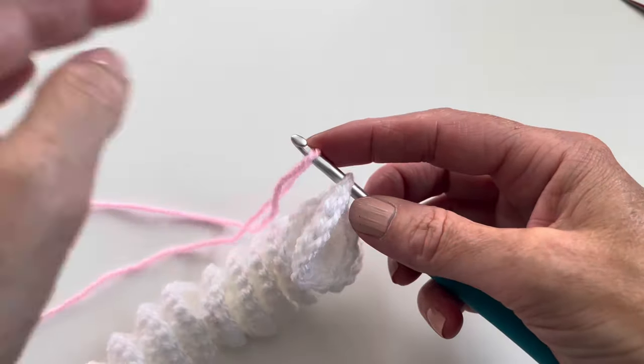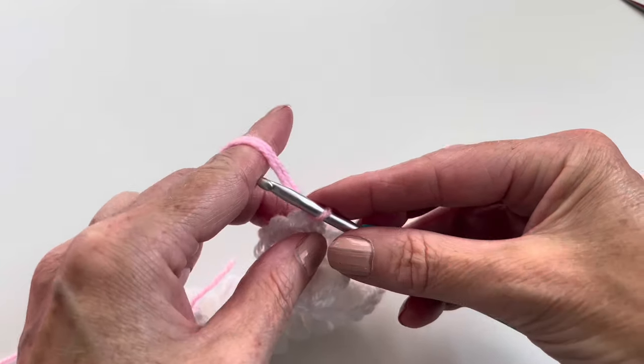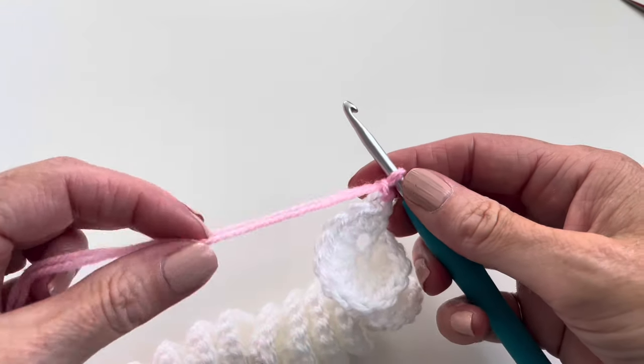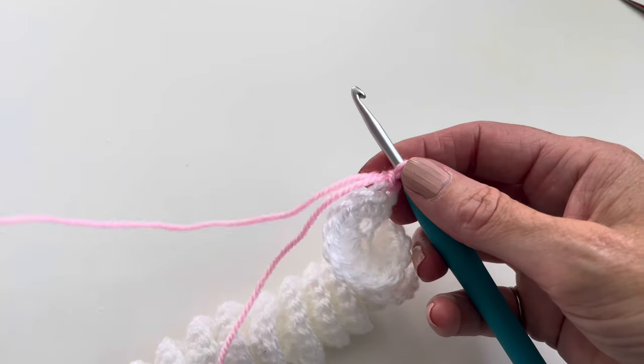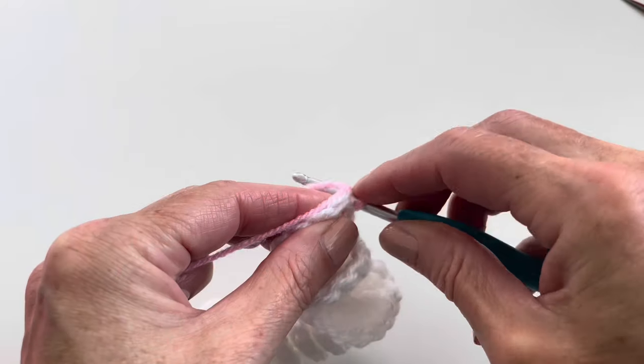And I will yarn over and pull through, yarn over the two threads and pull through. And now I will make one single crochet into the first chain.